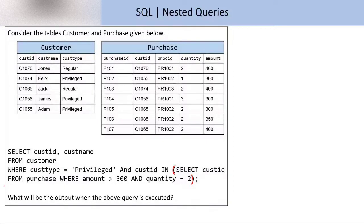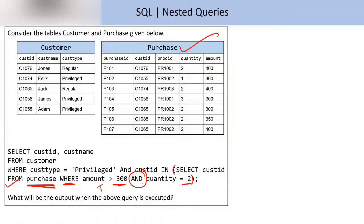Then we go to WHERE. We are considering the purchase table and the conditions are: amount should be greater than 300, AND quantity equal to 2. We have two conditions connected by AND, meaning both conditions must be true at the same time. AND gate: you get true only when both inputs are true; if any input is false, you get false.